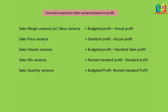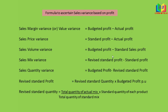The formulas to calculate sales variance based on profit are: Sales margin variance (also known as value variance) = budgeted profit minus actual profit. Sale price variance = standard profit minus actual profit. Volume variance = budgeted profit minus standard profit. Sales mix variance = revised standard profit minus standard profit. Sales quantity variance = budgeted profit minus revised standard profit. The revised standard profit uses the formula: revised standard quantity into budgeted profit per unit. Revised standard quantity = total quantity of actual mix divided by total quantity of standard mix, into standard quantity of each product.